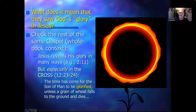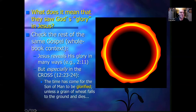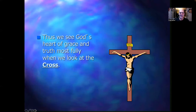What does it mean that the disciples saw God's glory in Jesus? You've got the transfiguration in Mark 9, Matthew 17, Luke 9. But in John it's like the whole gospel — his whole ministry reveals his glory. His first sign in Cana of Galilee in chapter 2:11 reveals his glory. But especially this glory climaxes in the cross, chapter 12:23–24: 'The time has come for the Son of Man to be glorified; unless a grain of wheat falls to the ground and dies.' Thus we see God's heart of grace and truth most fully when we look at the cross.